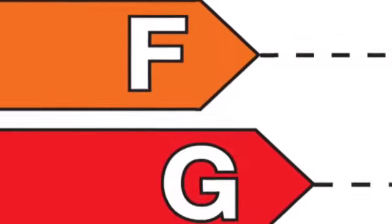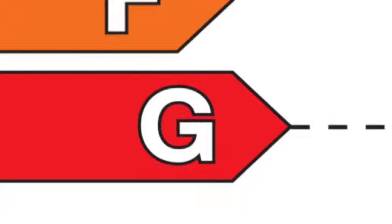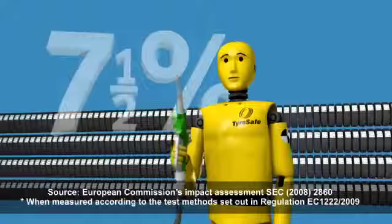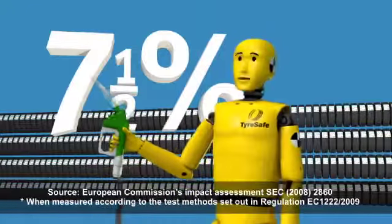through to Category G, which is the least fuel efficient. Driving on A-rated tyres could reduce your fuel consumption by 7.5% compared with G-grade tyres.